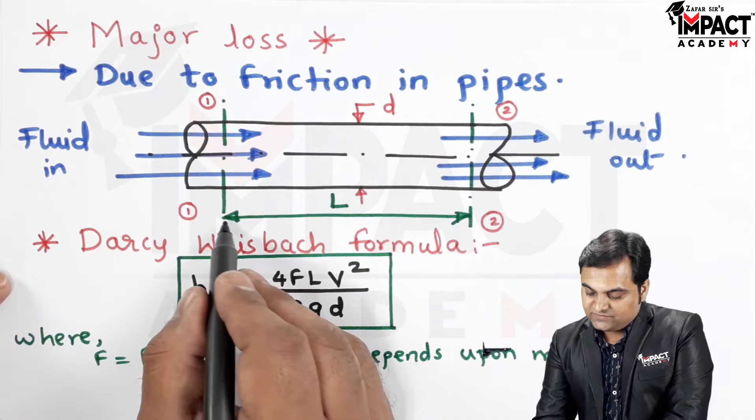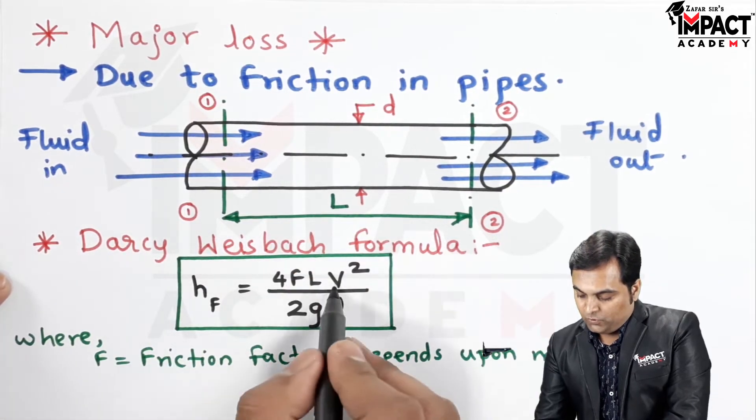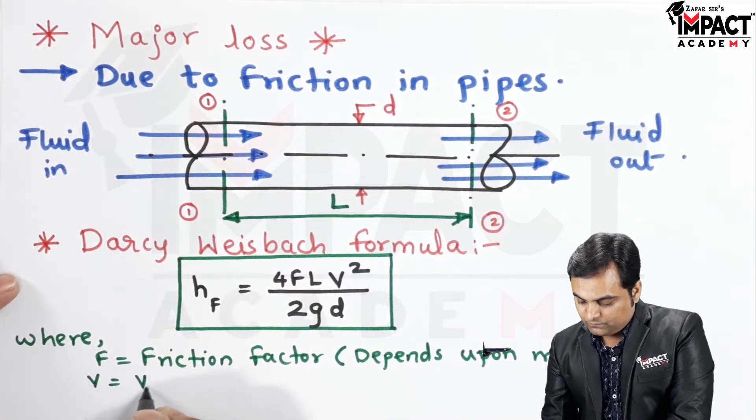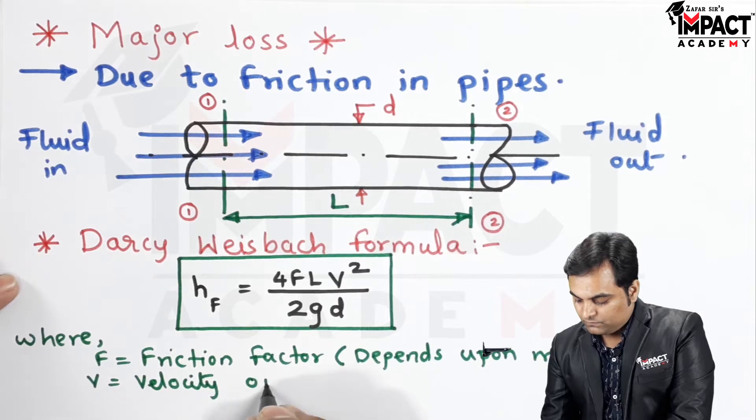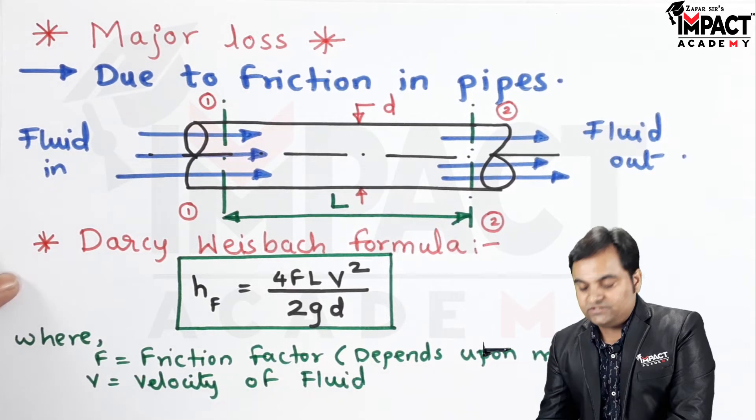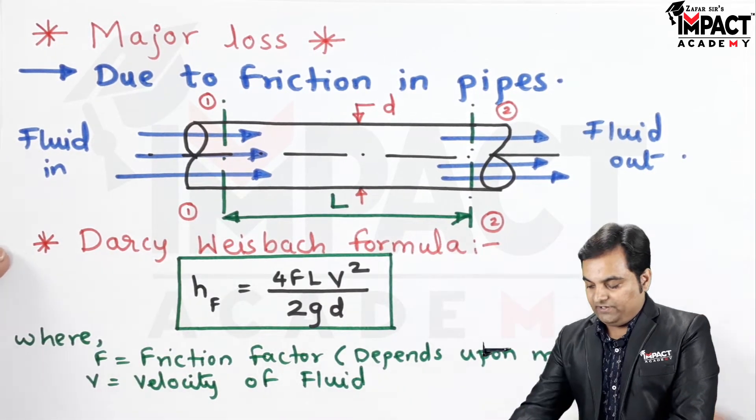Next, L as we know it is the length of the pipe. V is the velocity of fluid which is flowing inside the pipeline.